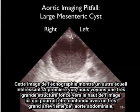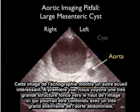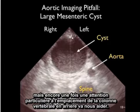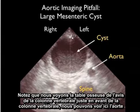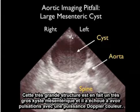This ultrasound image shows another interesting pitfall. At first glance, we see a very large dark structure towards the top of the picture that could be mistaken as a very large abdominal aortic aneurysm. But close attention to the location of the spine posteriorly will help us out. Notice just anterior to the spine we can actually see the aorta. This very large structure is actually a very large mesenteric cyst, and it failed to have pulsations with power color Doppler.